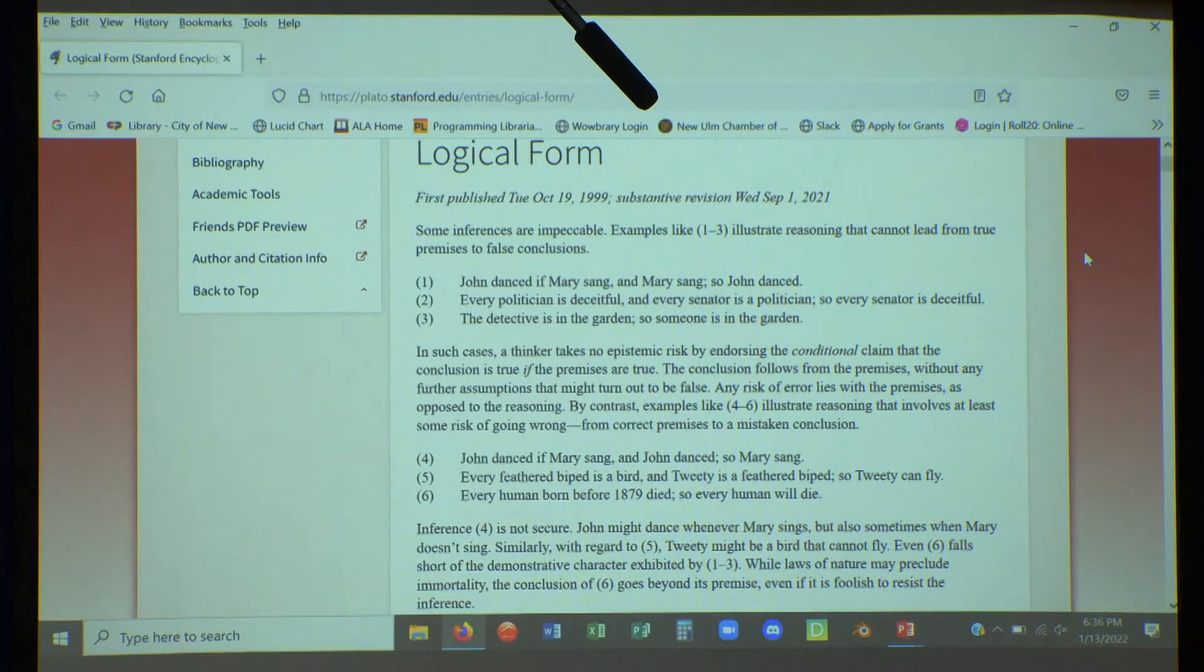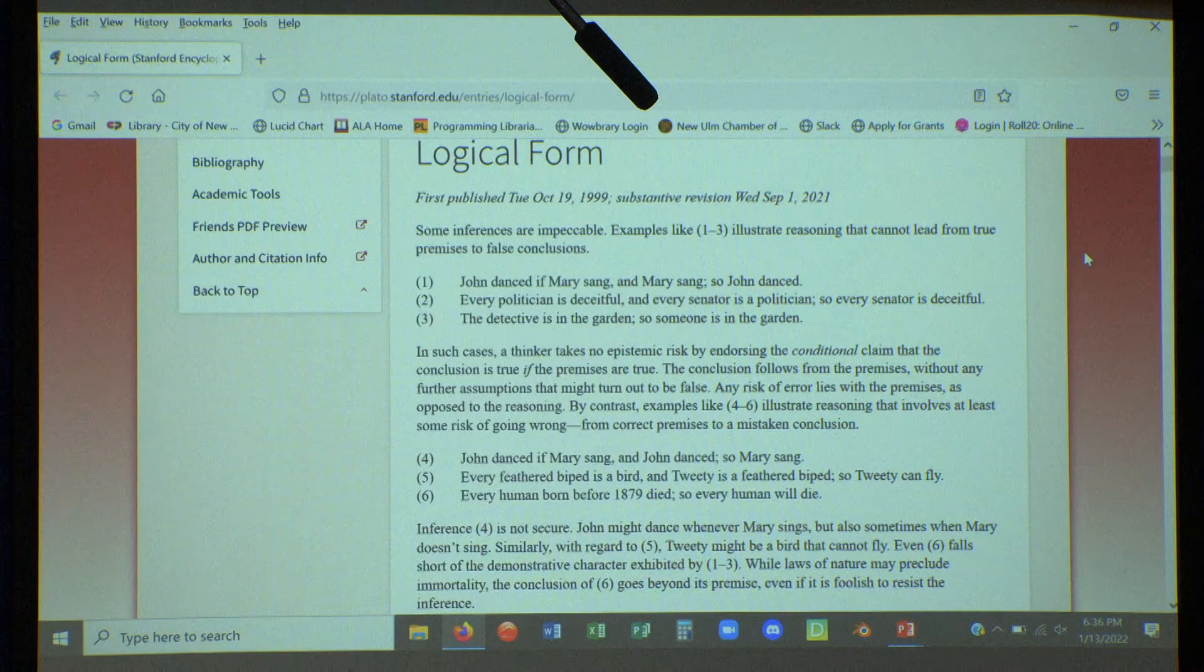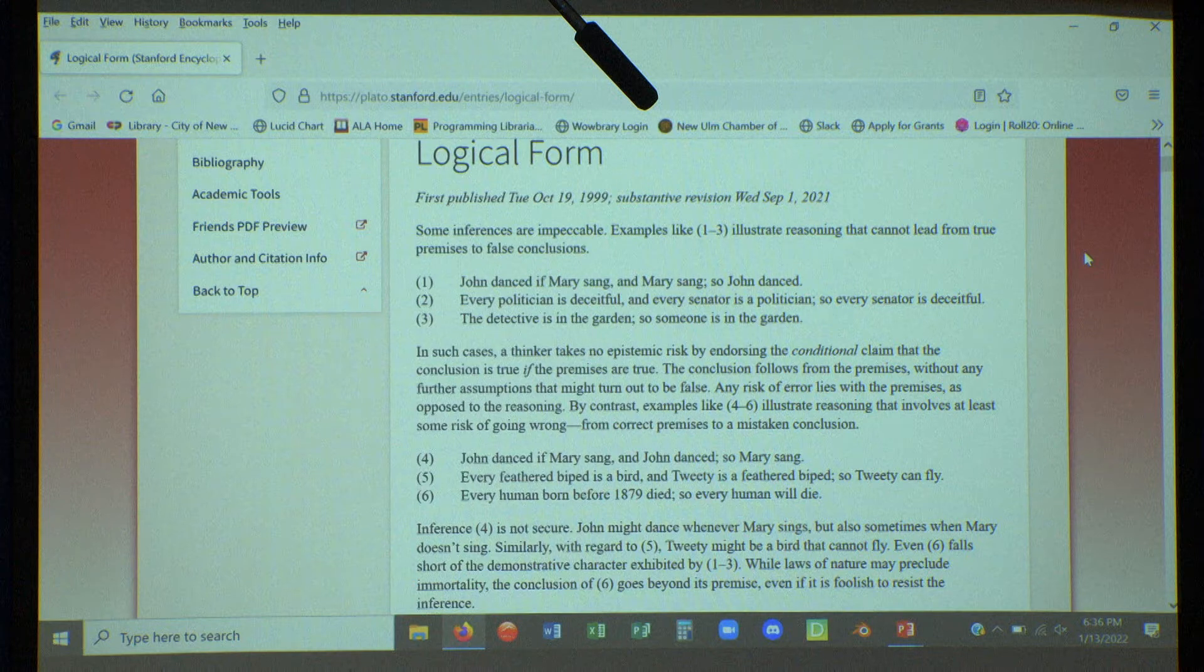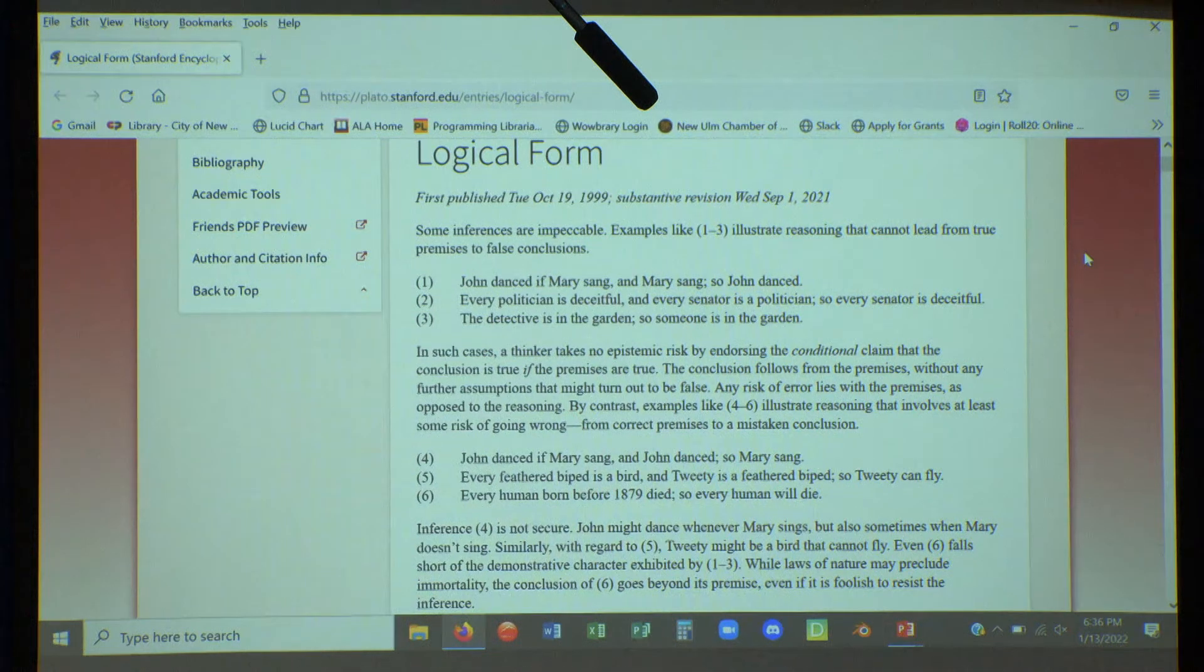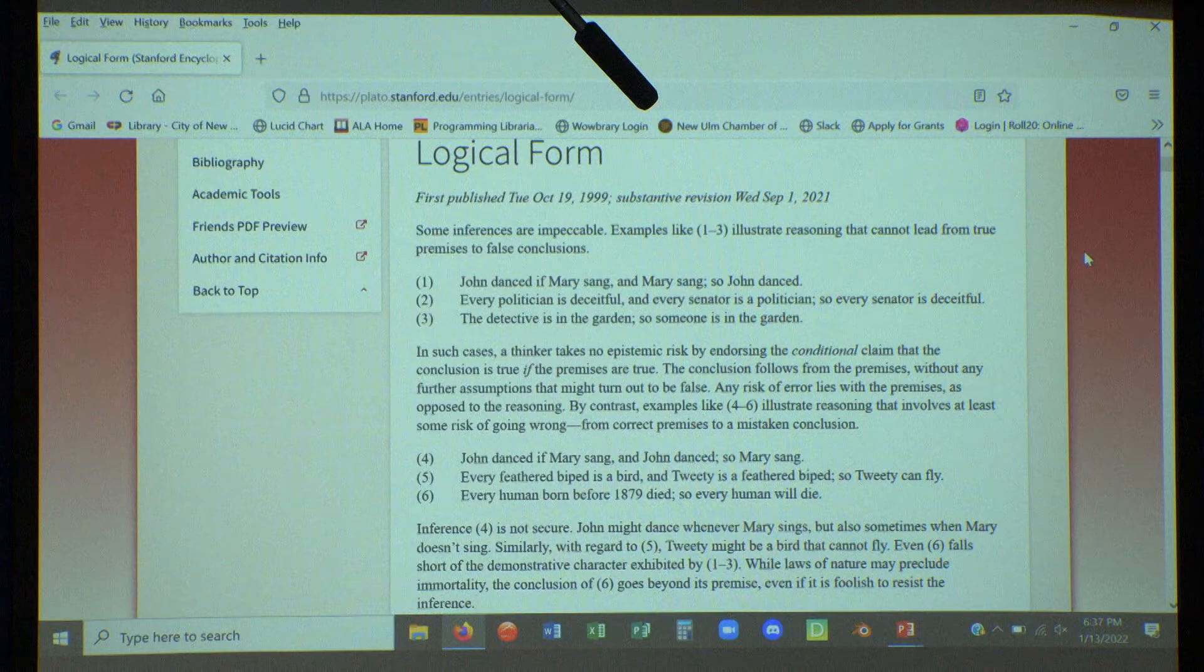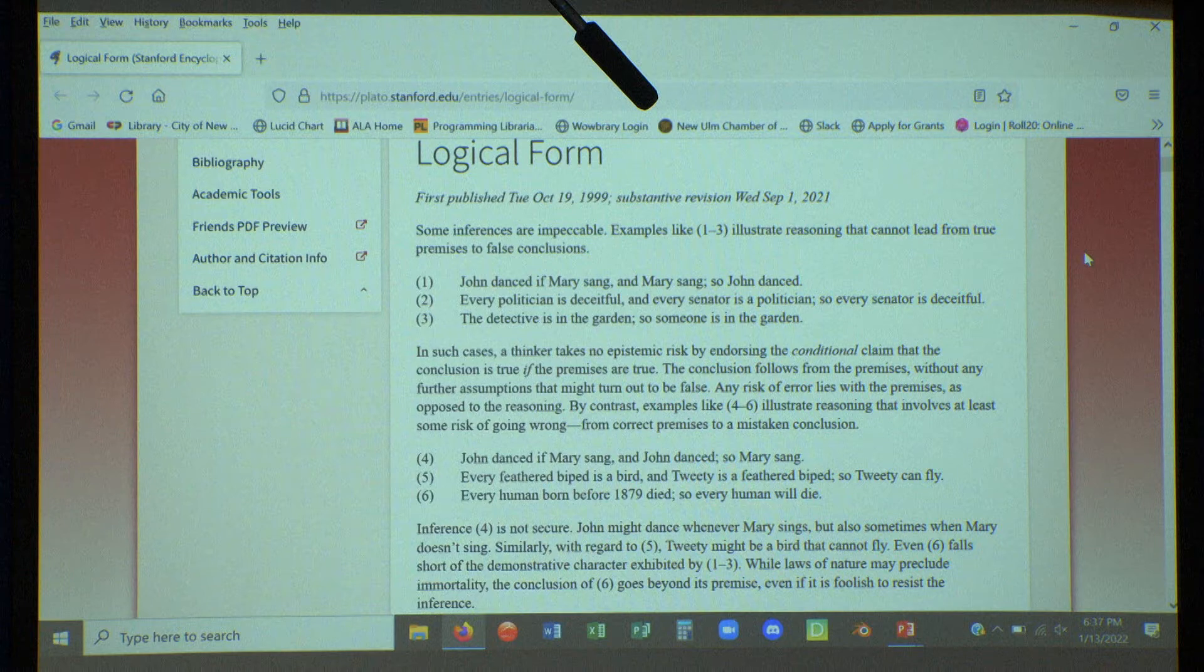But if we look at the bottom three: John danced if Mary sang, and John danced so Mary sang. Why is that not logically valid? Could there be other conditions in which John might dance? We don't have John danced if and only if Mary sang. He could dance under other circumstances. So it does not follow just because he danced that Mary sang. Every feathered biped is a bird, and Tweety is a feathered biped, so Tweety can fly. Why is that not valid? It's missing the fact that birds can fly. It's starting with a false assumption. The false assumption being all birds fly, but we know that there are plenty of birds that do not fly.